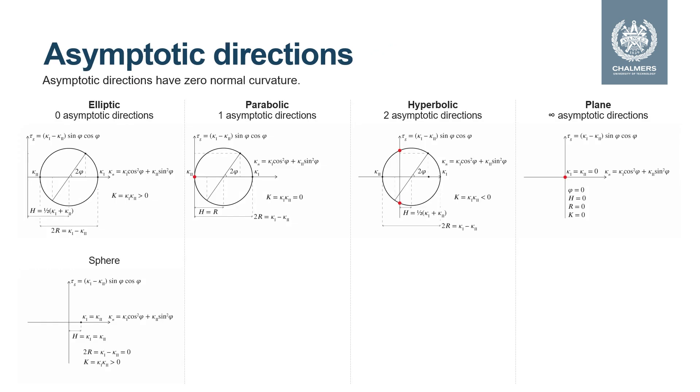We will from time to time also discuss asymptotic directions and these are directions on the surface where the normal curvature is zero.